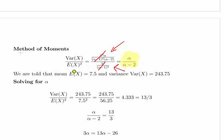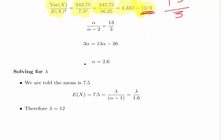So we're going to solve for alpha. The expected value of X is 7.5, the variance is 243.75. We divide the variance by the mean squared: 243.75 by 7.5 squared, which is 56.25, we get 4.333. For simplicity, I'm going to re-express that as 13 divided by 3. So when we cross multiply, alpha divided by alpha minus 2 equals 13 over 3, and you should get alpha equals 2.6.